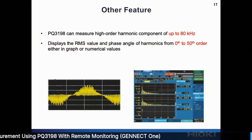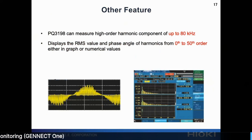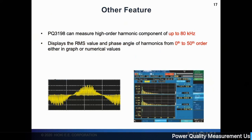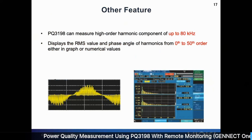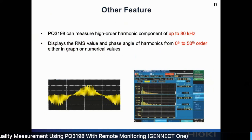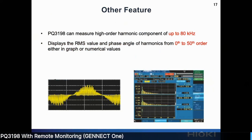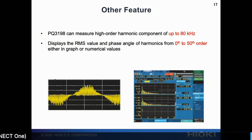Another feature is high-order harmonics measurement. It can measure from 0 to the 50th order. After the 50th order — which is considered the high-order harmonics spectrum — it can detect harmonics up to 80 kHz. You can see from the waveform that the high-order harmonics are captured.